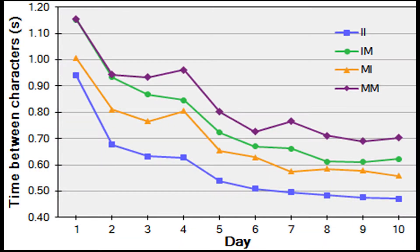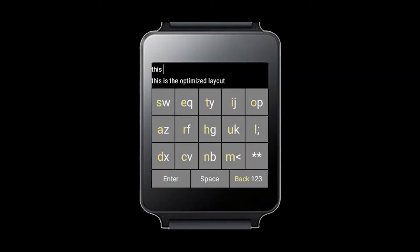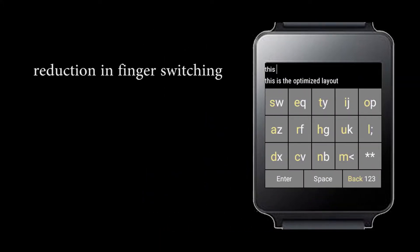Based on the data, we optimized the keyboard layout to minimize finger switching. The resulting SWEGT layout reduced the finger switching by 62%.